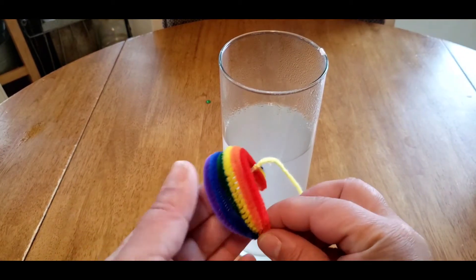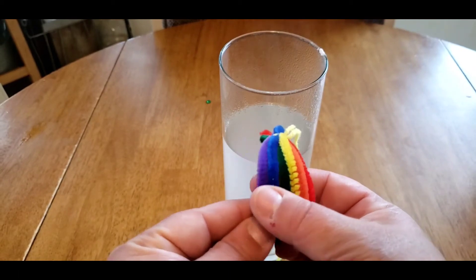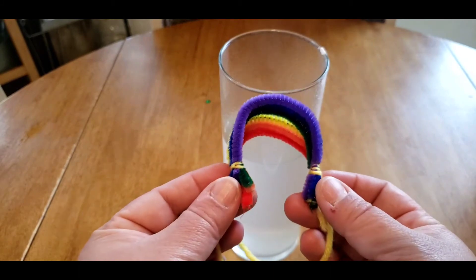What I did before the video was I got a red, orange, yellow, green, blue, and purple pipe cleaner. We cut them in half and we made a rainbow.